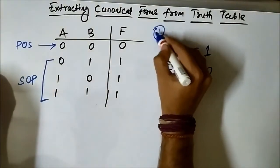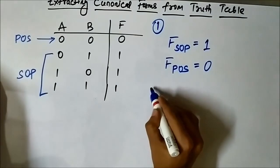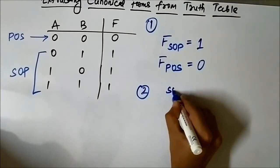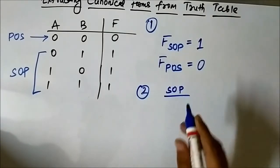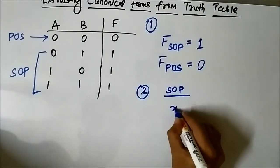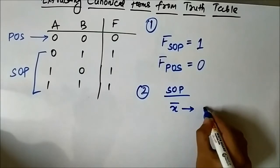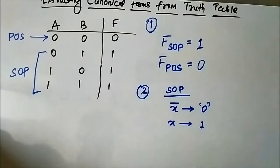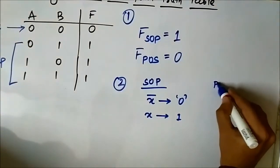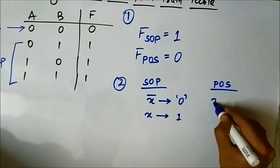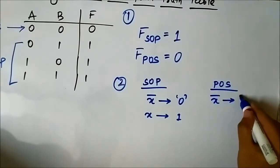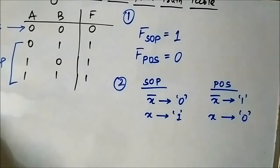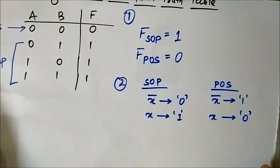The second important point is that in SOP, or sum of minterms, each complemented variable represents logic 0 and each uncomplemented variable represents logic 1. This is another rule we should remember.